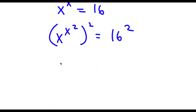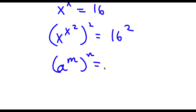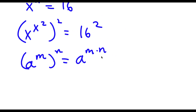An important property of exponents is that if I have something in the form a to the power of m to the power of n, this is equal to a to the power of m times n. And m and n are interchangeable, meaning a to the power of m times n is the same thing as a to the power of n times m.